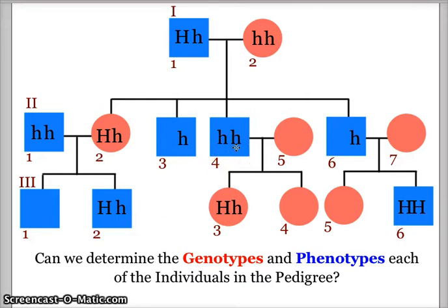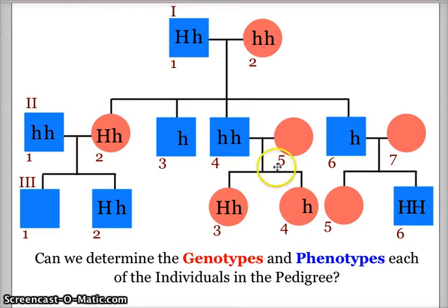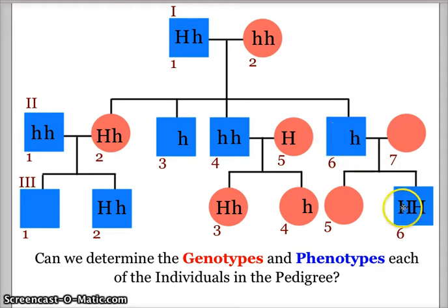Individual four is homozygous recessive and can only give a little h to each of his offspring, so he gives a little h to individual three-three and a little h to individual three-four. When we look at individual five, we can examine her offspring: since one child has Huntington's disease, that big H has to come from the mother. So we know individual five must carry a big H, but since we don't know her other allele, we'll leave that blank for now.